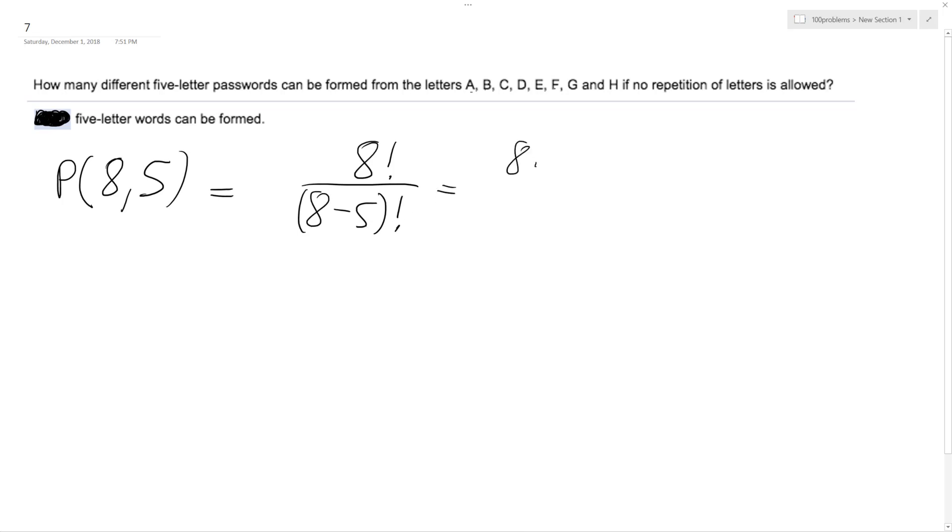So we get eight times, and that ends up being three factorial, eight times seven times six times five times four times three times two times one over three times two times one.